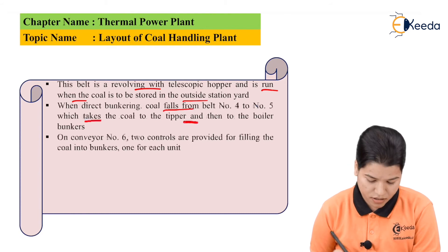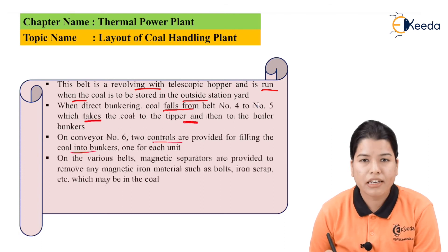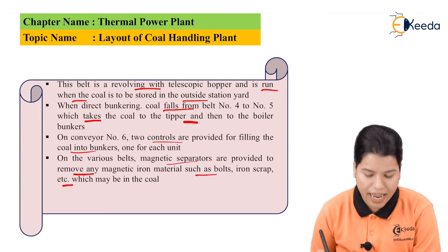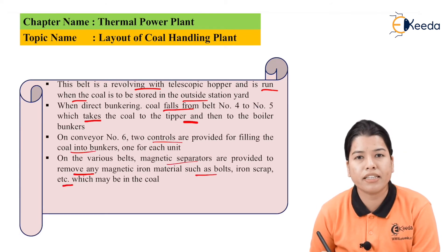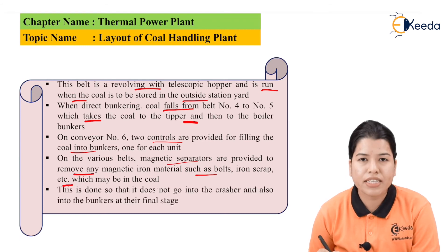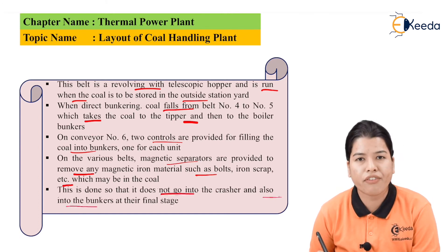Belt number 3 is a revolving belt with a telescopic hopper and is run when the coal is to be stored in the outside station yard. On conveyor number 6, two controls are provided for filling the coal into the bunkers, one for each unit. On the various belts, magnetic separators are also provided in order to remove any magnetic material such as bolts, iron scraps, etc., which might be present in the coal. The coal needs to be cleaned so that no magnetic material goes into the crusher or into the bunkers at the final stage.